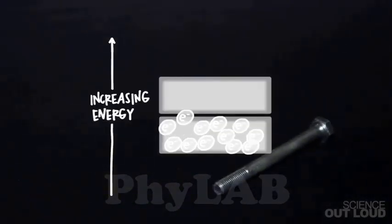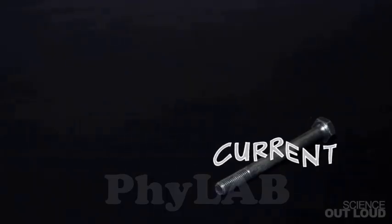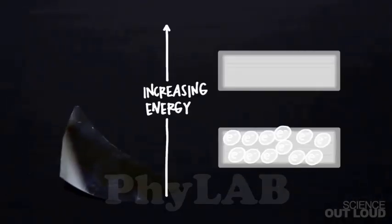Metals have no gap at all. Electrons can move to the higher energy levels with no problem. Current can flow. Semiconductors fall somewhere in the middle. They have a medium-sized band gap.